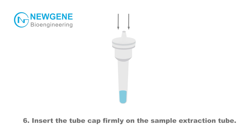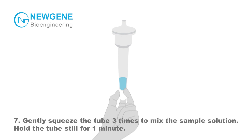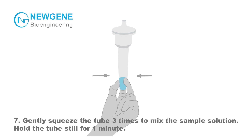Step 6: Insert the tube cap firmly on the sample extraction tube. Step 7: Gently squeeze the tube three times to mix the sample solution. Hold the tube still for one minute.